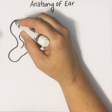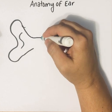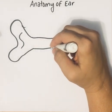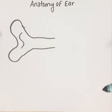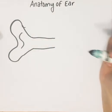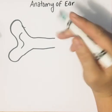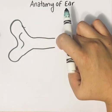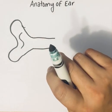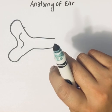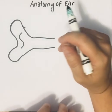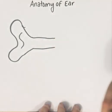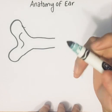Your auricle leads to a tube which we call the external acoustic meatus, or your external auditory canal, which is going to have your ceruminous glands — modified sweat glands that produce cerumen, which is earwax. So the more you sweat, the more earwax you produce.